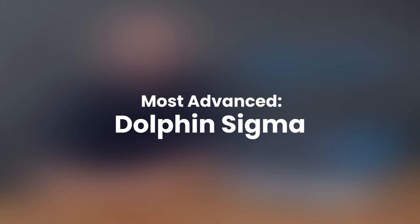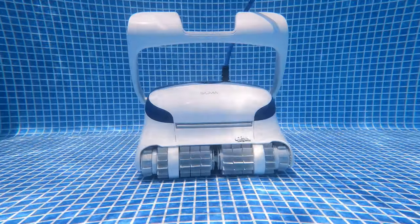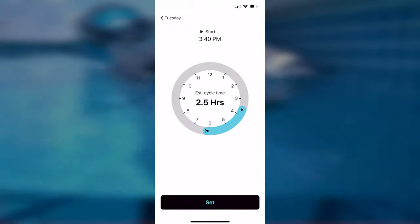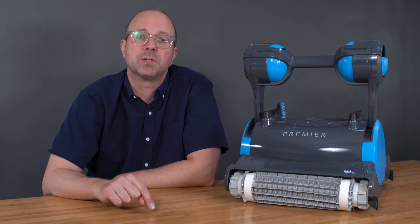Most advanced: the Dolphin Sigma. With triple commercial-grade motors, gyroscope, smartphone app, three-year warranty, and nanofilters, the Sigma delivers the power and performance one would expect in a commercial pool robot.